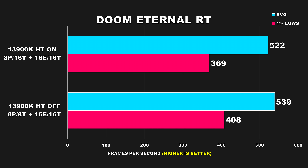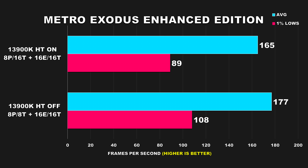Doom Eternal — while either configuration offers a buttery smooth experience due to how well optimized the game is, with hyper-threading disabled there's a 3% average FPS boost and a notable 10% uplift for 1% lows. Metro Exodus Enhanced Edition is an interesting one. It also showed a pretty drastic margin when I tested E-cores, and this game uses ray tracing by default. Here we see noteworthy differences when disabling hyper-threading: a 7% increase for average FPS, and the 1% lows improved by a whopping 18% — the largest margin in our test suite — going from 89 to 108 FPS for 1% lows, which would definitely be noticeable.